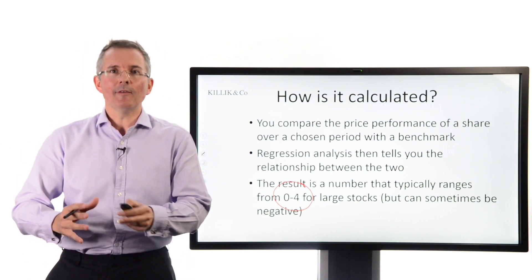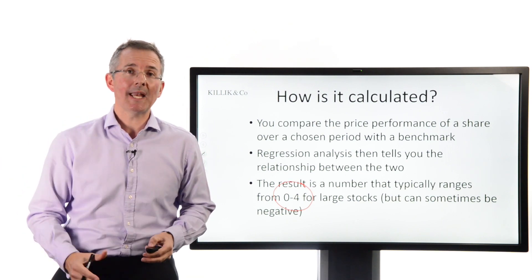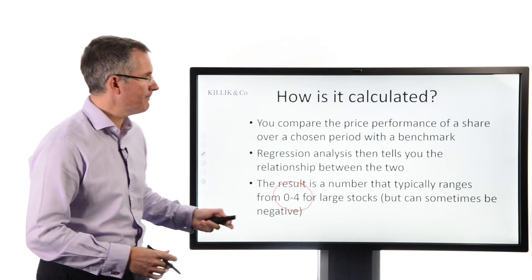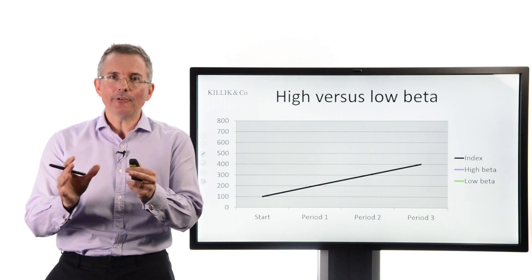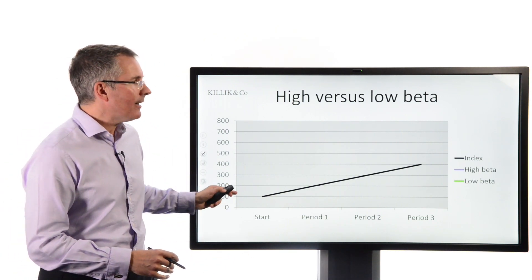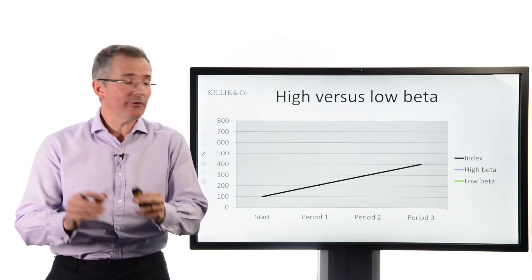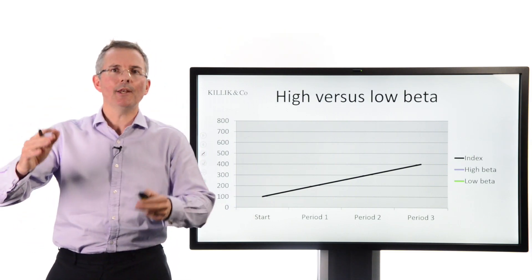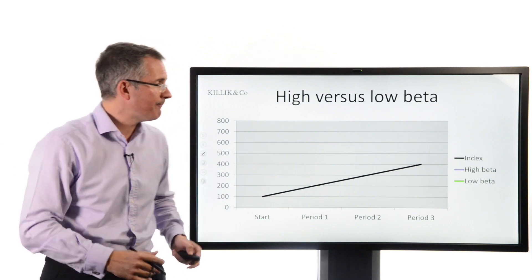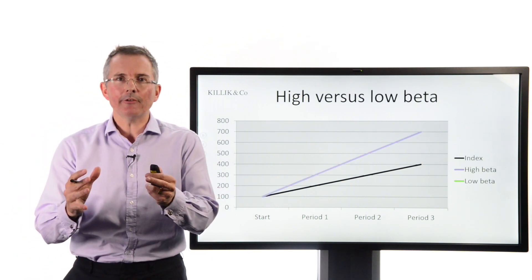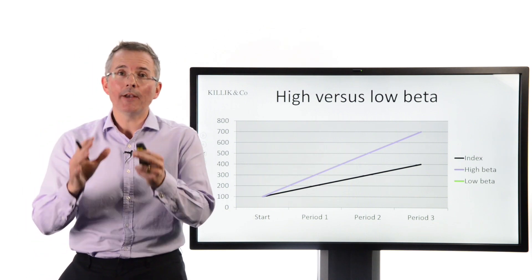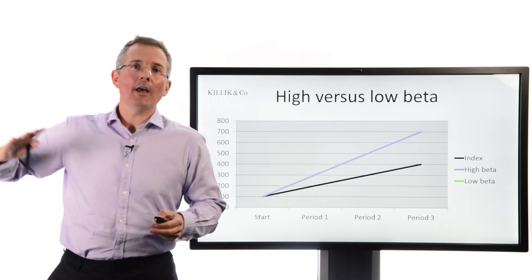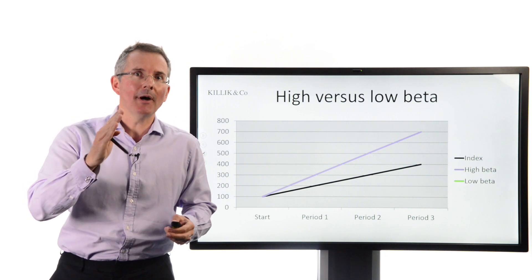Let's say someone has crunched the numbers, looked back over two years, compared the FTSE 100 to the share you're looking at, and the beta is 1, 2, or 3. A beta of 1 means a stock that basically moves with the benchmark. A high beta stock — for example, technology firms — will tend to outperform the index; it goes up faster. A beta of 2 suggests that if the market moves up 10%, the stock will, on average, move 20%. Beta is all about capturing how much faster it moves.